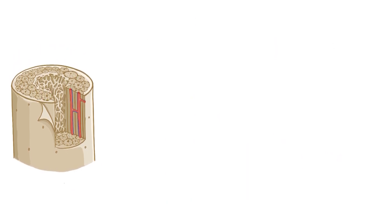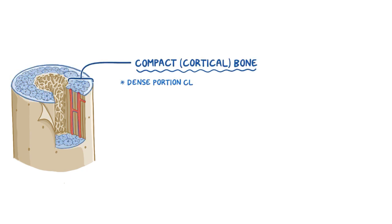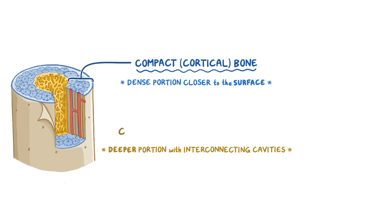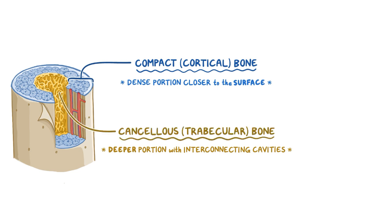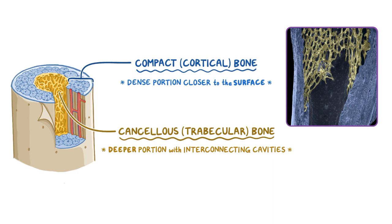Morphologically, there are two main types of bones. The compact, or cortical bone, is the dense portion found closer to the surface of bones. The deeper portion of bones have interconnecting cavities and are called the cancellous, or trabecular bone. In this electron microscopy, or EM, image of the tibia, the compact bone is shown in blue and the more central trabecular bone is yellow.